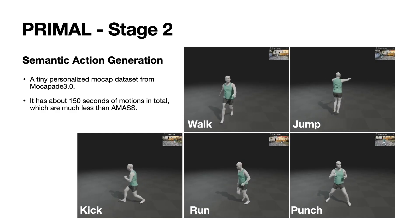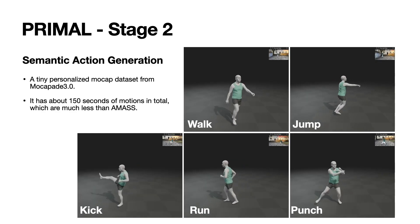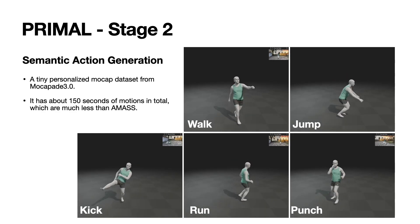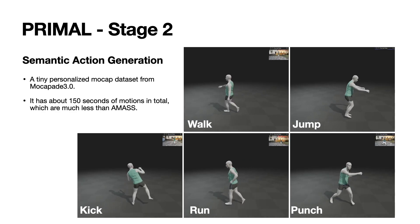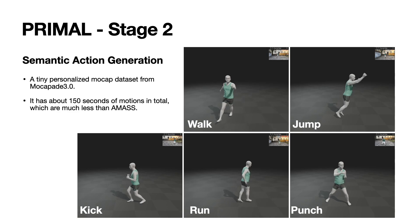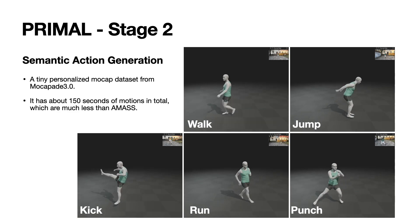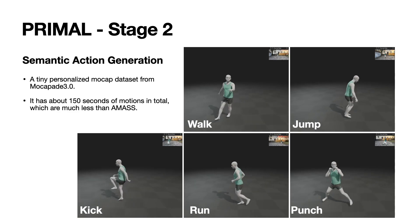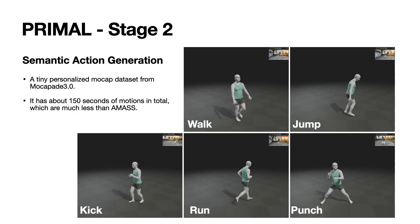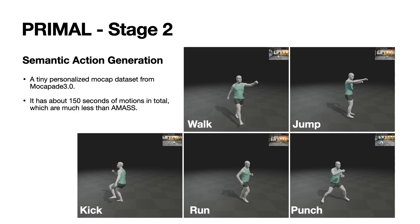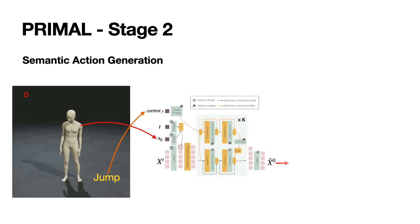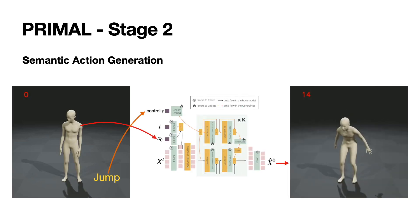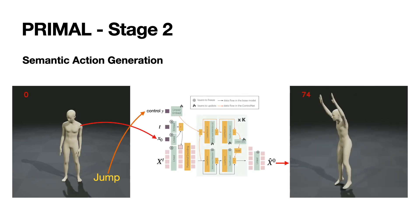Regarding few-shot semantic action generation, we use a cell phone to capture a few videos and then use Mocapade 3.0 to estimate the body motions. The captured motion dataset has five action classes and is highly personalized. We perform fine-tuning based on this small dataset. Results show the effectiveness of our method.